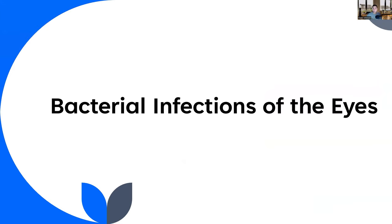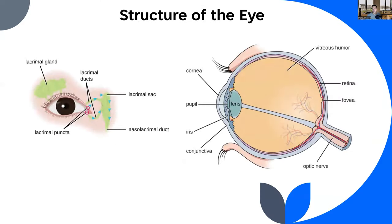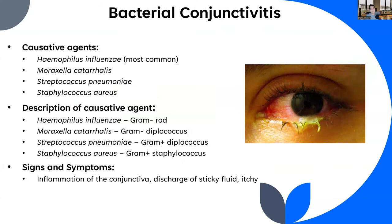Now we're going to turn our attention to bacterial infections of the eyes. Just a reminder of what the structure of the eye looks like - I'm focusing on the microbiology, but understanding the anatomy helps us understand what tissues are being infected. One of the most common bacterial infections of the eye is bacterial conjunctivitis. Any bacteria that gets in the eye can be problematic, but I'll focus on the four most predominant causative agents.